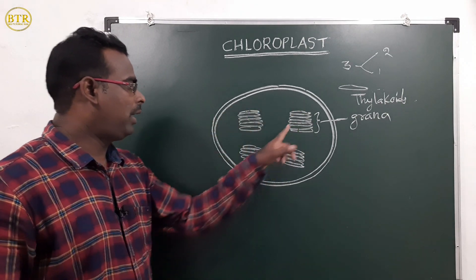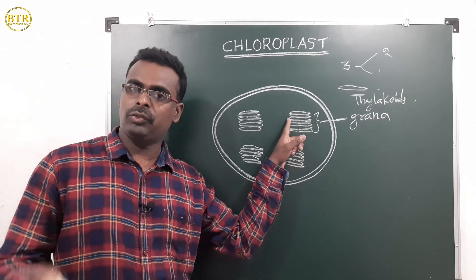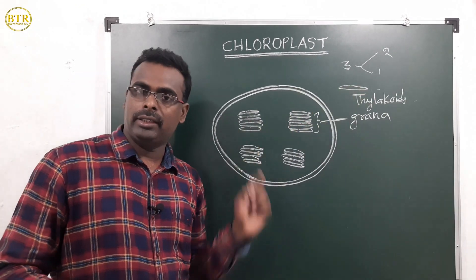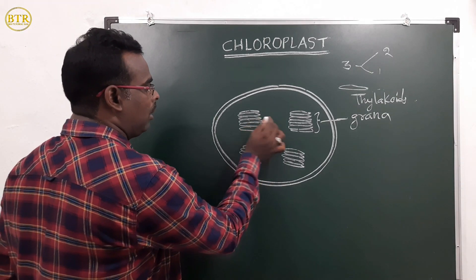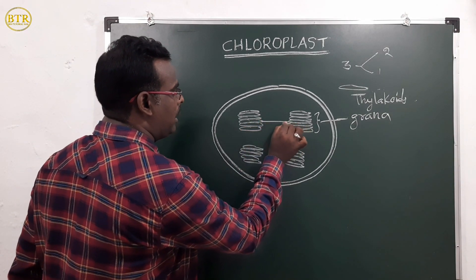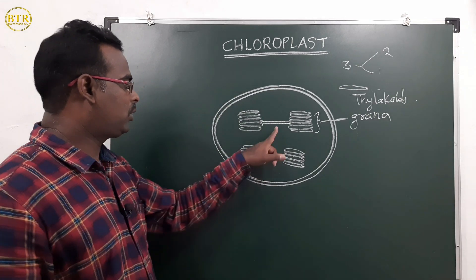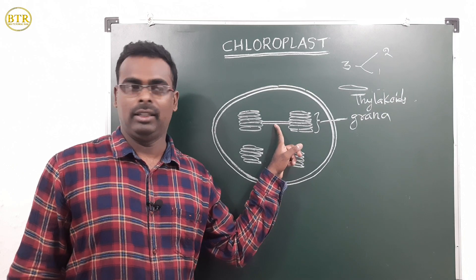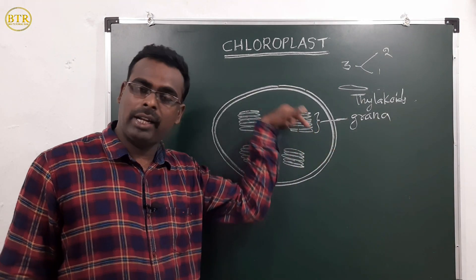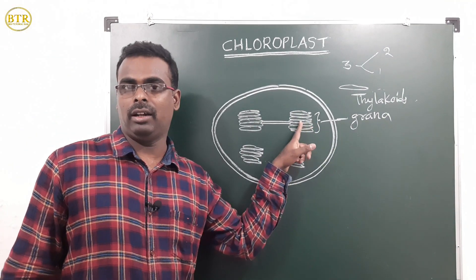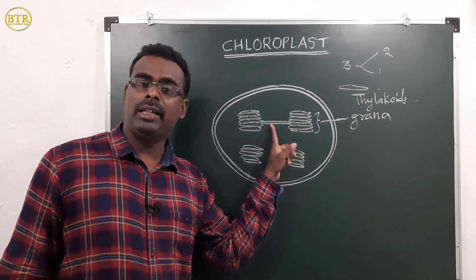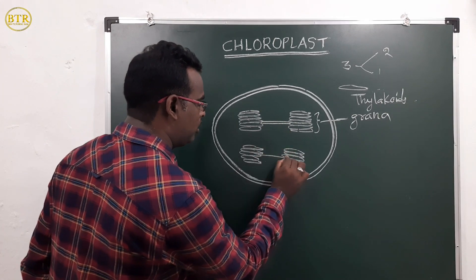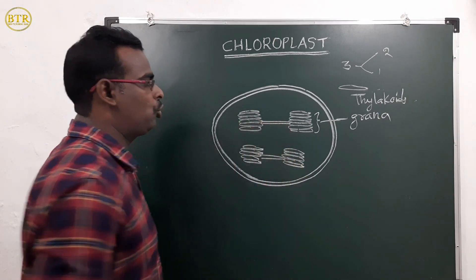The thylakoids present inside the grana are called grana thylakoids. Some thylakoids also connect two granas — they are present in between the granas. These thylakoids are called stroma thylakoids or stroma lamella.